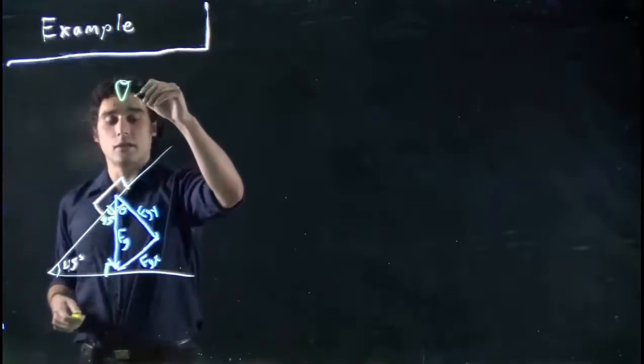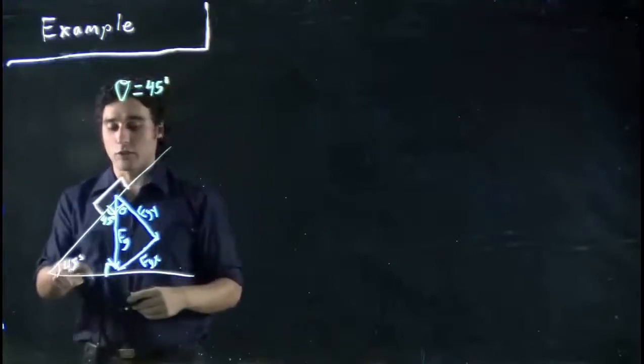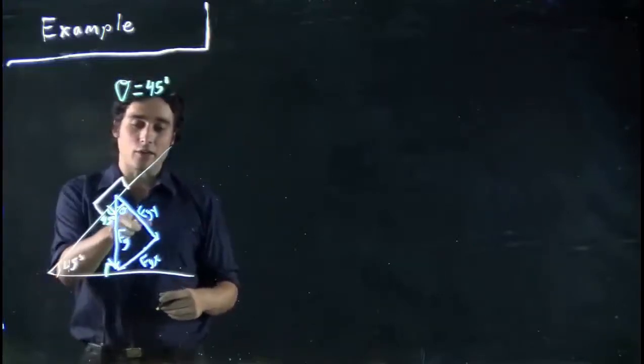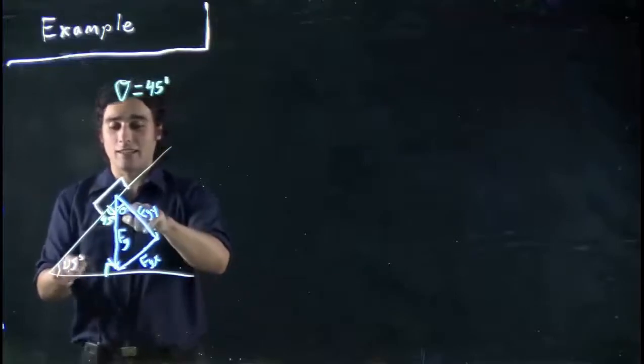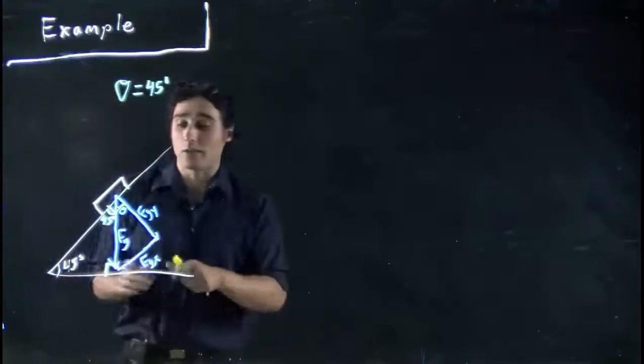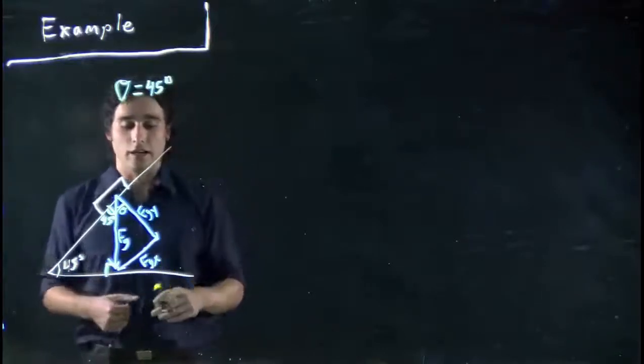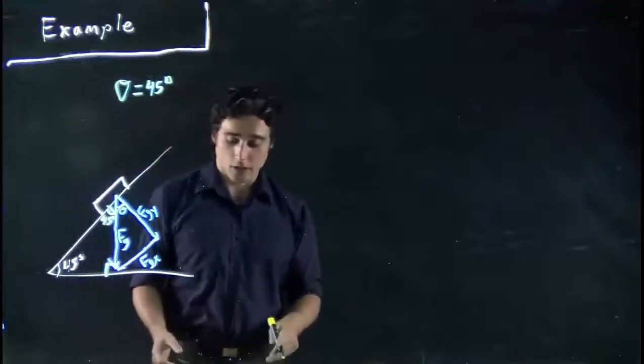Probably should have used other numbers to drive this home. If this was 30, this would be 60, and therefore this would be 30. We're going to find this and this are the same. So when you do these problems, you're going to find this angle and this angle are the same. We solved theta is 45.